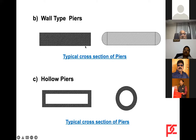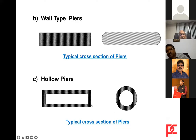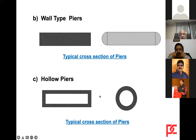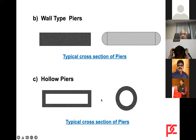Apart from single shaft piers, there are wall-type piers — where the length is more than four times the width — and hollow piers of rectangular or circular section. Hollow piers are adopted where piers are very tall, like 30 to 40 meters. The advantage of hollow sections is that for a given cross-sectional area, we get a large moment of inertia (I value), making them efficient for tall piers.